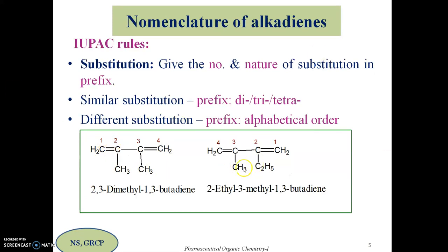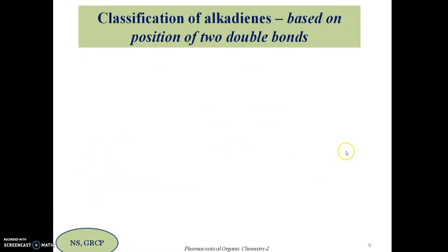If the substituents are different — for example, an ethyl group at the second position and a methyl group at the third position — the groups should be indicated in alphabetical order as a prefix to the parent molecule name. This gives 2-ethyl-3-methyl-1,3-butadiene. These are the IUPAC naming rules for alkadiens.